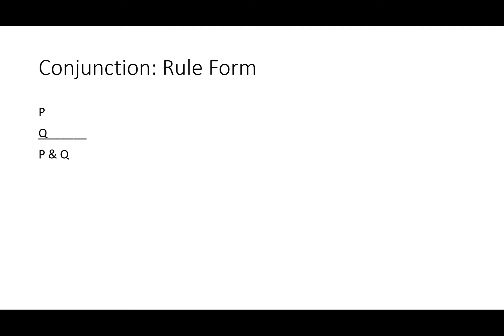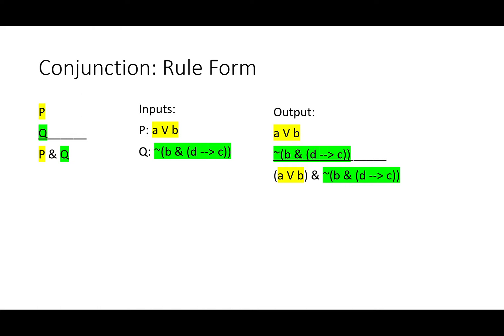Conjunction is the mirror to simplification. P and Q separately entail P and Q together. Just as before, we'll use simple inputs first: A and B. But you can use conjunction for anything no matter how complex. Here we'll take either A or B for P, and a long sentence, it's not the case that B and if D then C, substituting that in for Q. A and B goes in for P and shows up in our premise as well as on the left side of the ampersand in the conclusion. This lengthy sentence substitutes in whole for Q and becomes the right-hand side of our conjunction. You can use conjunction to connect any two well-formed formulae.